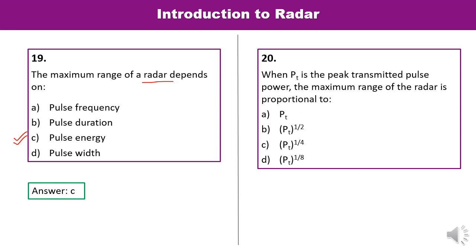Question 20: When Pt is the peak transmitted pulse power, the maximum range of radar is proportional to what? This formula is very important — you may find many questions based on it. The maximum range of radar is proportional to the 1/4th power of transmitted power. C is the correct answer.